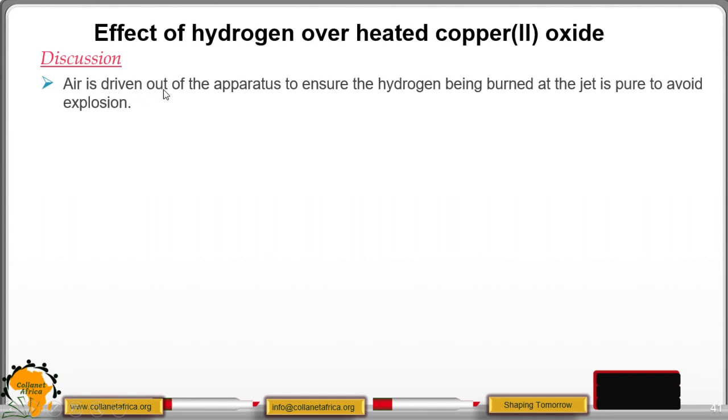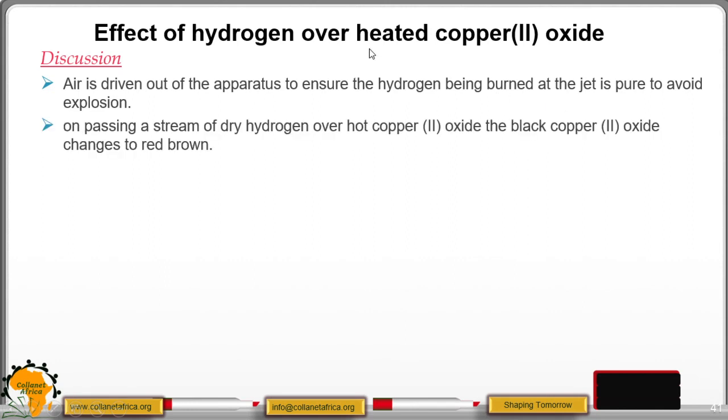Air is driven out of the apparatus to ensure the hydrogen gas being burned at the jet is pure to avoid explosion.